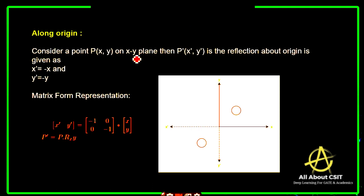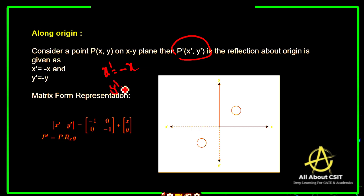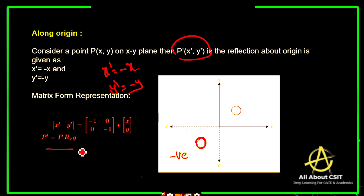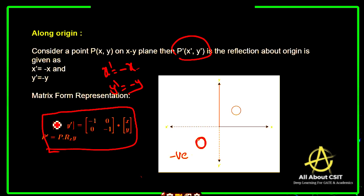For reflection along the origin, considering point P(x, y) on the XY plane, the new coordinates P-dash (x-dash, y-dash) give x-dash as minus x and y-dash as minus y. Both coordinates move into the negative quadrant. The matrix form representation along the origin is [x-dash, y-dash] = [-1, 0; 0, -1] times [x, y].